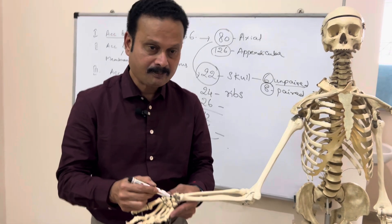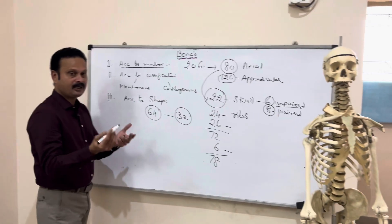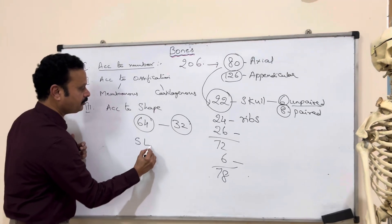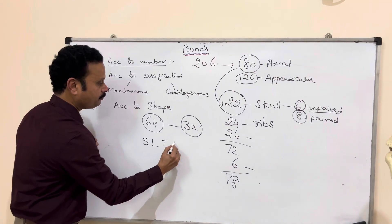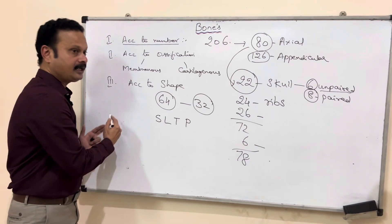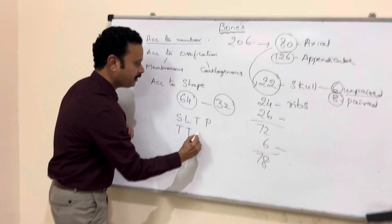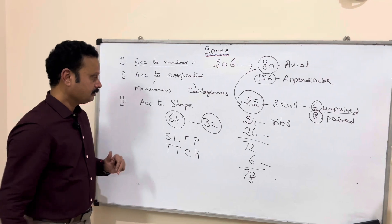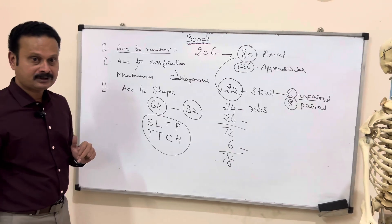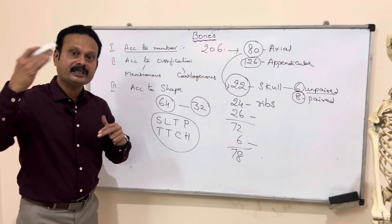The 8 carpal bones are arranged in 2 rows, 4 bones each. In the proximal row from lateral to medial: scaphoid, lunate, triquetral, pisiform. In the distal row from lateral to medial: trapezium, trapezoid, capitate, hamate.